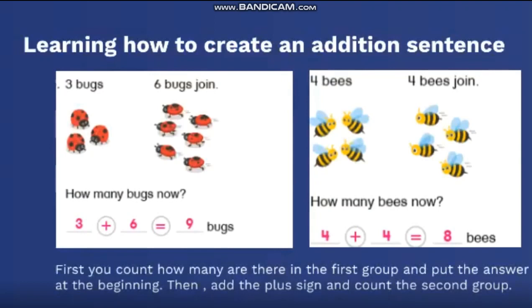How do we create an addition sentence? We need to look at the number of the items that we have and write it down. Like, if we look at the bugs there. At the beginning, I had three bugs. So, I need to write three. And how many bugs joined them?